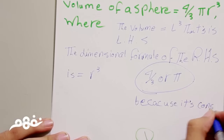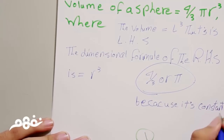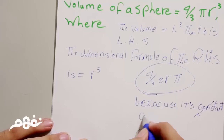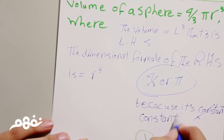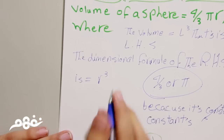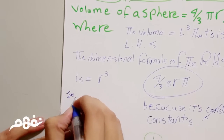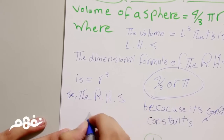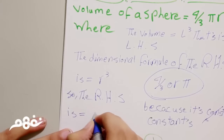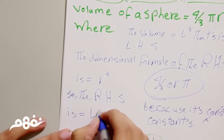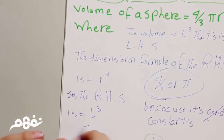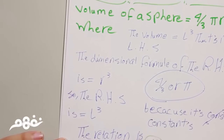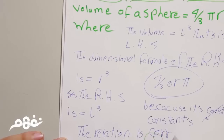Since 4/3 and pi are constants, they have no dimensions. So the right-hand side equals length cubed. The relation is correct.